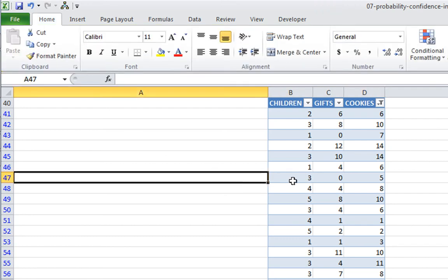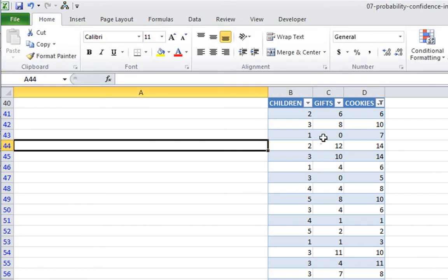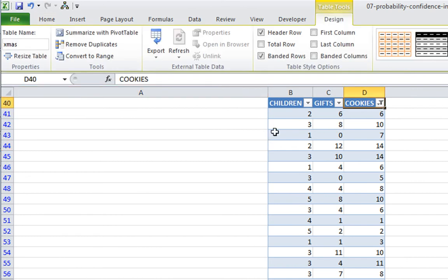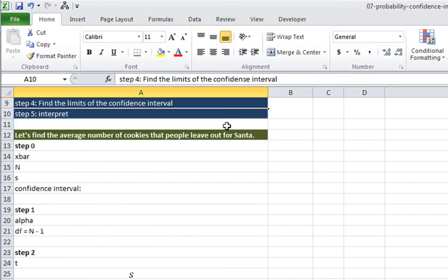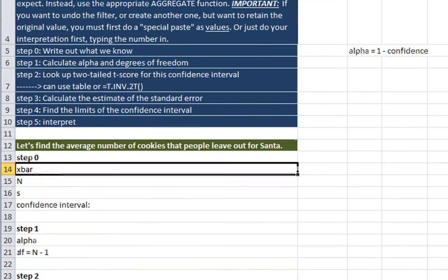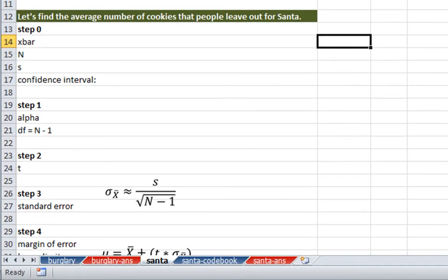Let's also give our table a name. Let's call it Xmas. So now we have our table Xmas and we have our variable cookies. We have our sample data. What do we want to do here? We want to calculate our sample mean and then we want to know, can we generalize that sample data to the population mean? So what is our sample mean?